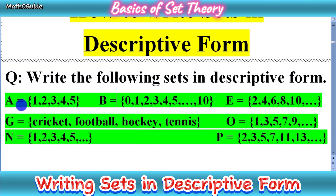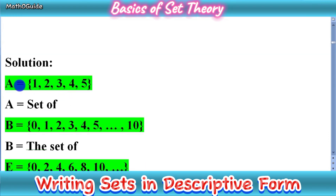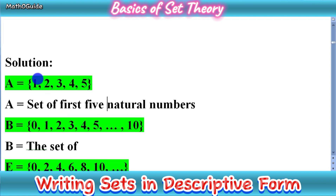As you can see, we have some sets A, B, E, G, O, N, and P. These are given sets in tabular form and we have to write them in descriptive form. As you know, descriptive form is derived from 'describe', so it means we have to write in statement form. First, we have set A = {1, 2, 3, 4, 5}. These are natural numbers starting from 1 going up to 5, so we write: set of first 5 natural numbers. This is the descriptive form of set A.